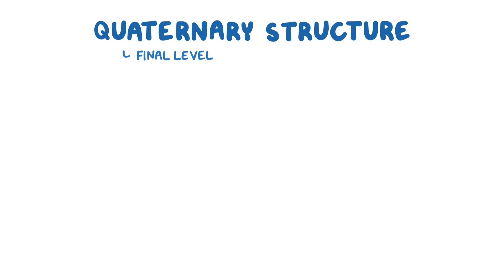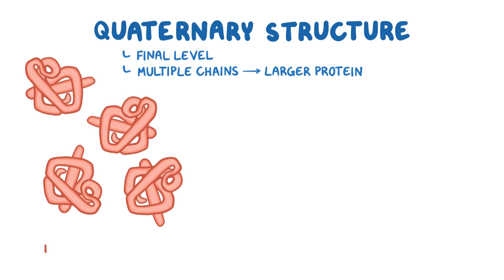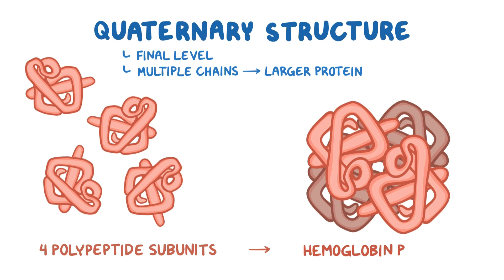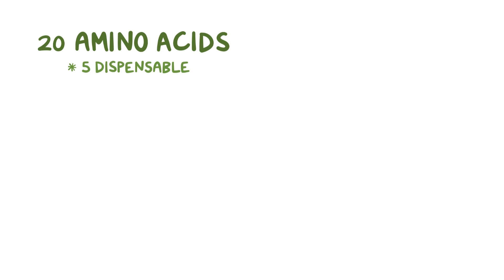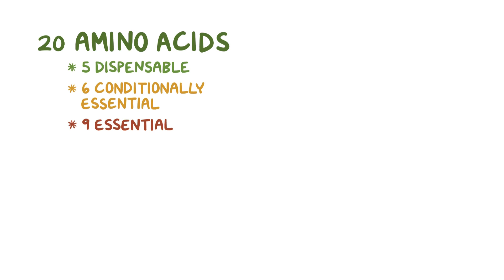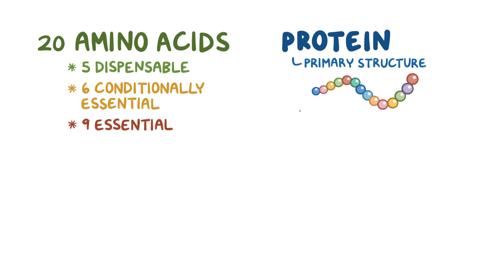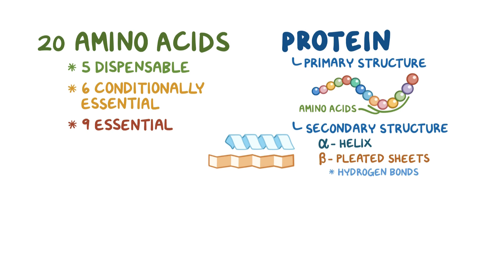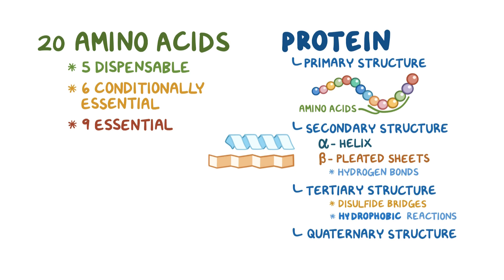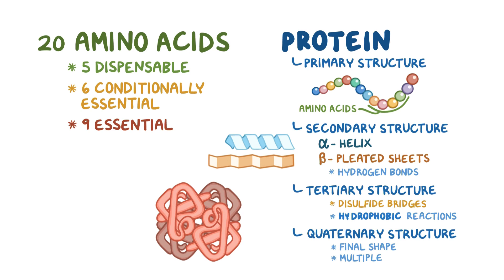Quaternary structure is the final level, where multiple polypeptide chains come together to form a larger protein structure. A classic example involves the four polypeptide subunits that come together to form a single hemoglobin protein in roughly a tetrahedral arrangement. As a quick recap: there are 20 amino acids—5 dispensable, 6 conditionally essential, and 9 essential. The primary structure is the linear sequence of amino acids; secondary structure includes alpha helix or beta pleated sheets, both relying on hydrogen bonds; tertiary structure involves disulfide bridges and hydrophobic interactions; and quaternary structure connects multiple polypeptides to create the final protein shape.